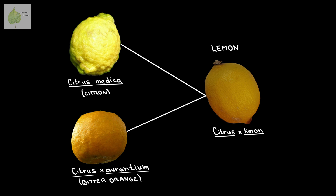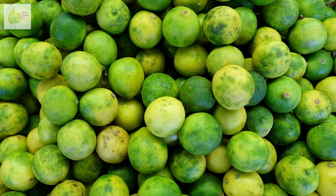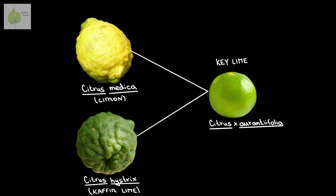Lemons, as basic as they seem, are a hybrid between citron, Citrus medica — again one of our core species — and another hybrid, bitter orange, Citrus × aurantium. Key limes, the main component of the famous key lime pie, are a hybrid between citron, Citrus medica, and another lime, kaffir lime, Citrus hystrix, which is that unusual-looking green bumpy lime.